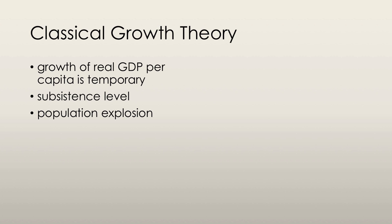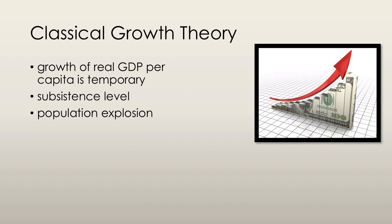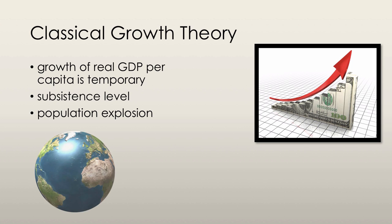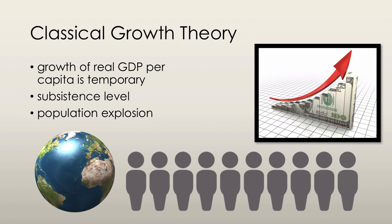Classical growth theory states that the growth of real GDP per capita is temporary, and that when it rises above something known as the subsistence level, a population explosion eventually brings it back to the subsistence level. Real GDP increases, but then there's a huge increase in the population.